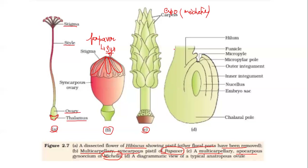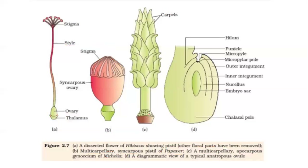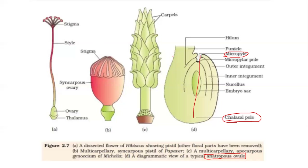The last diagram is the typical diagram of an anatropous ovule. In an anatropous ovule, the chalaza and the micropyle — chalaza is the opening on one side, and micropyle is the opening on the other side — both lie opposite to each other.